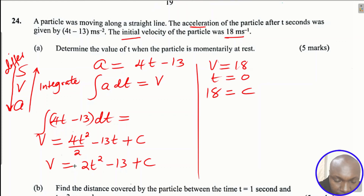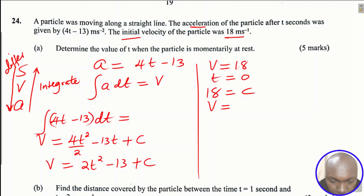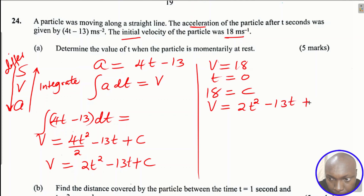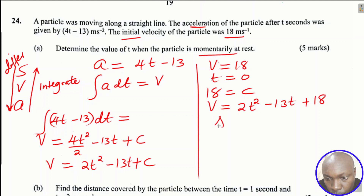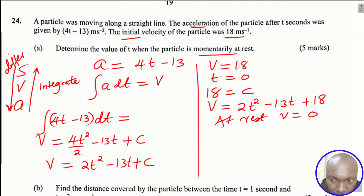In the expression v equals 2t squared minus 13t plus C, substituting v equals 18 and t equals 0 gives C equals 18. Therefore, the expression for velocity is v equals 2t squared minus 13t plus 18. Now, after getting the expression for velocity, we determine the value of t when the particle is momentarily at rest.